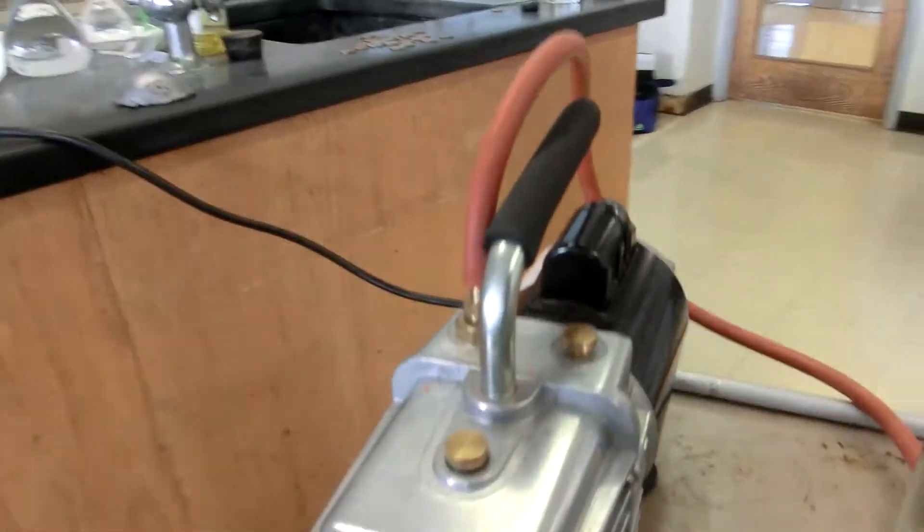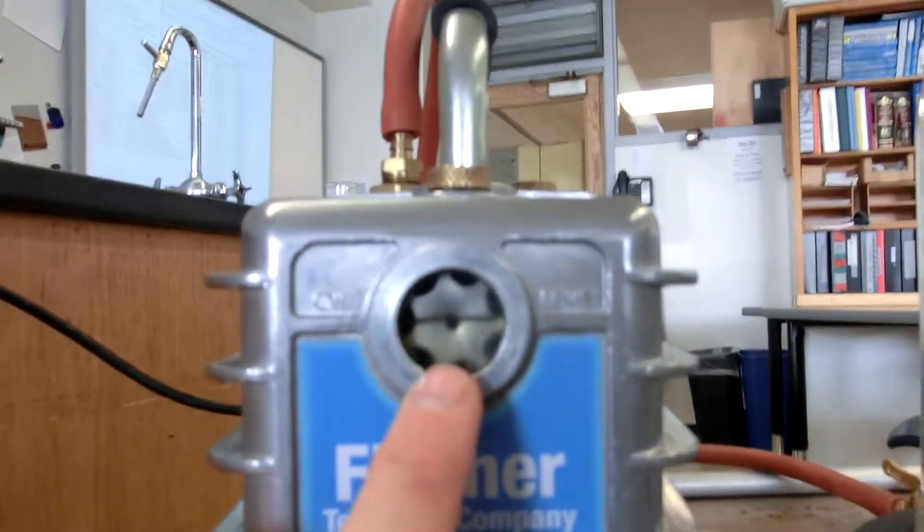On the vacuum pump you'll notice that on the back is the on and off switch. And on the other side right here is going to be the oil level.